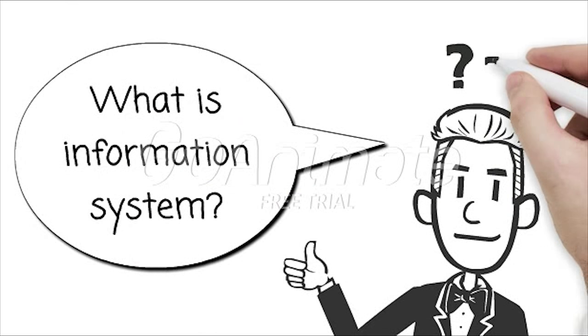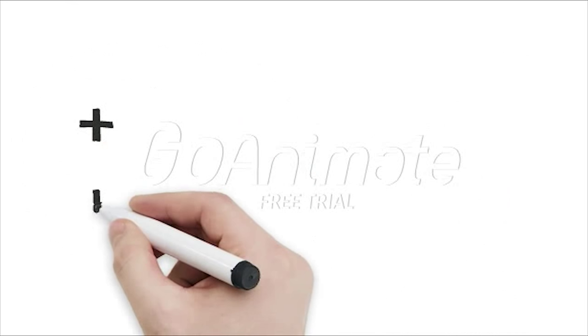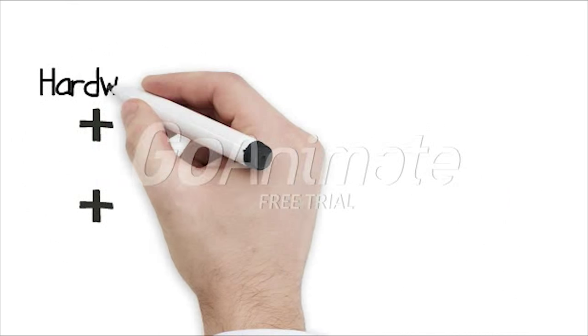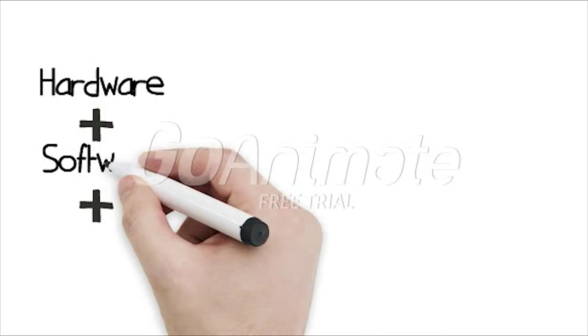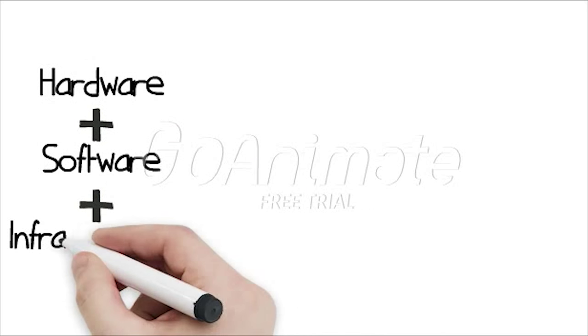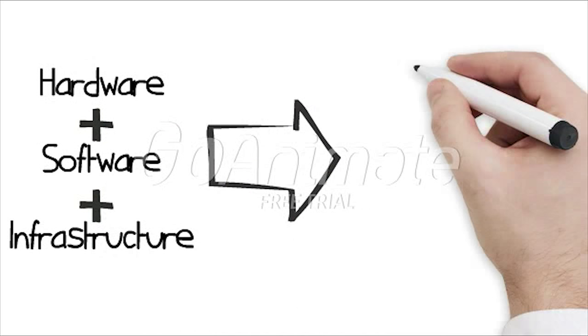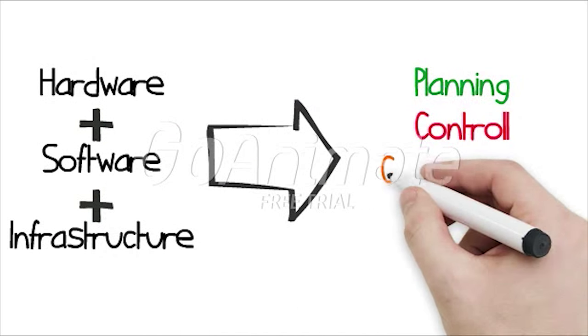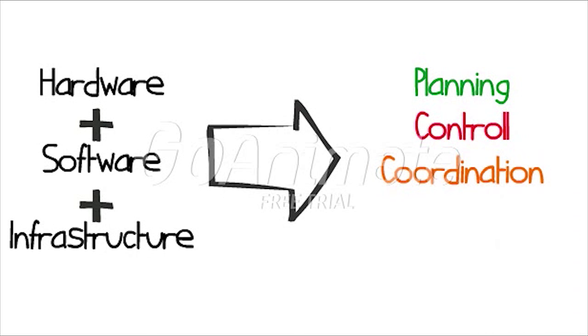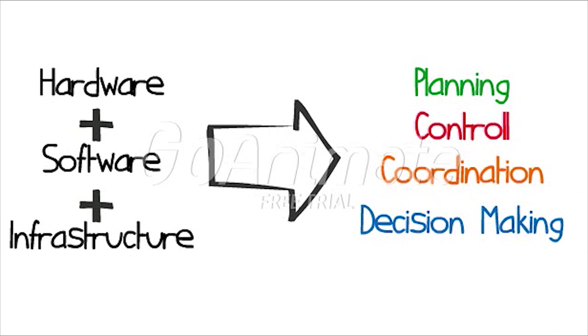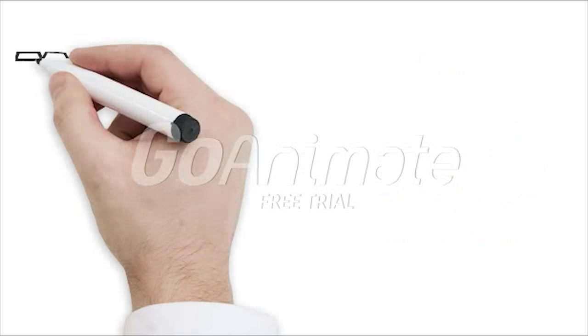What is information system? Information system is a combination of hardware, software, and infrastructure to facilitate planning, control, coordination, and decision making in an organization.